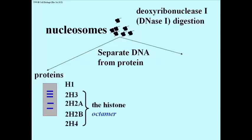These are the histone proteins: H1, H3, H2A, H2B, and H4 — these are historically derived names. The histone octamer around which the DNA double helix wraps contains 2 each of all the histones except H1, and there is 1 molecule of H1 associated with each nucleosome.